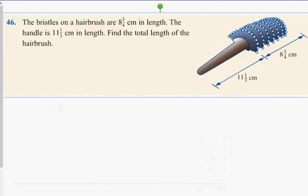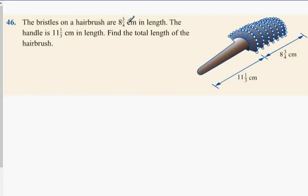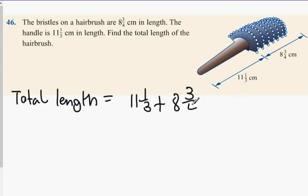Just this one here. The bristles of a hairbrush are 8 and 3/4 centimeters in length. The handle is 11 and 1/3 centimeters in length. Find the total length. What do I need to do to get the total length, guys? What equation? Connor. First, you have to change both of the fractions into top-heavy fractions. But before that, I meant to add them together, right? Yeah. Okay. Now, what do I do first? You change 11 and a third into top-heavy fraction. And what do I get? You get 34 over 3. 3 times 11 plus 1, which is 34 over 3, which is perfect. And what about 8 and 3 quarters? 35 over 4. Plus 35 over 4.